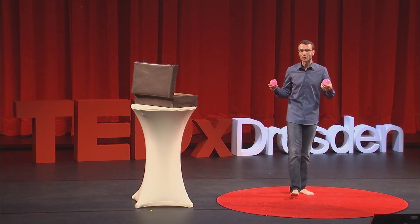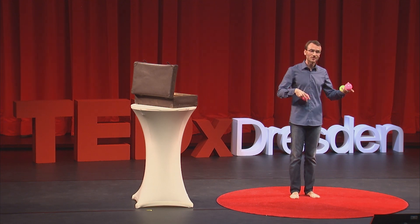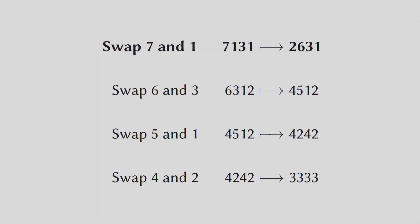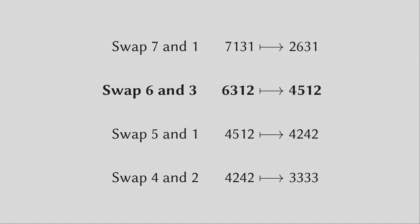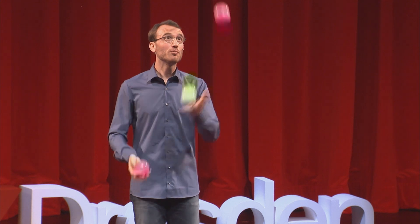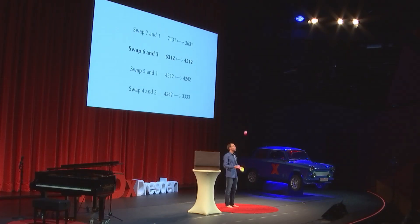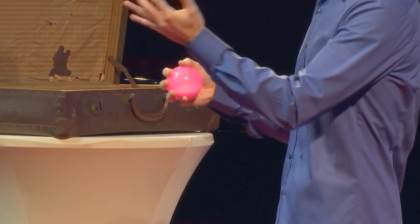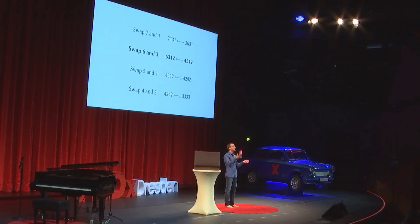We did not change the number of balls because we just swapped the moments at which we throw two balls. We did not change the average because we added one to one number and subtracted one from the other. So now we iterate the process. We started with seven, one, three, one, swapped the seven and the one and got two, six, three, one — which is the same as six, three, one, two. Now we swap the six and three and get four, five, one, two, which looks like this. The green ball is just doing fours and the red balls are doing five, one, two.